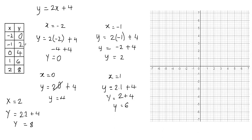Now I have all my x and y values. These values are the points on the coordinate plane — remember that every point is an x and y coordinate, and each pair is an ordered pair. So the points are: negative 2 comma 0, negative 1 comma 2, 0 comma 4, 1 comma 6, and 2 comma 8.